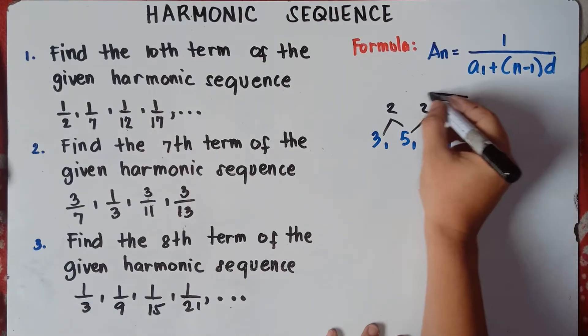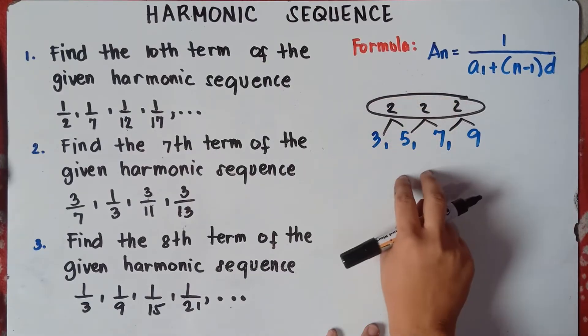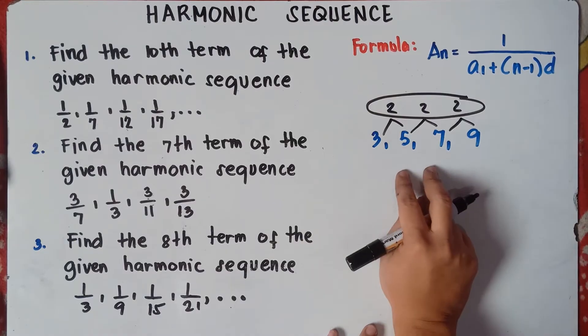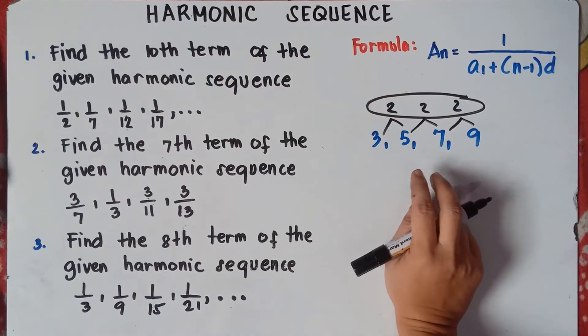Now, if the common differences are the same, therefore this will be an arithmetic sequence.